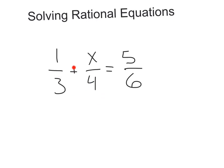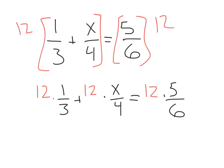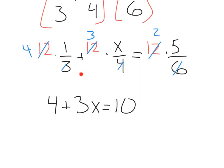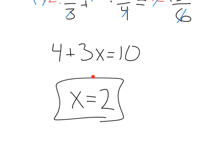Think back to the lesson where we solved by clearing fractions. We would take something like this, multiply by whatever your common denominator is, distribute it out to each term, and then see what cancels out. In this case, the 12 and 3 leave a 4, the 12 and 4 leave a 3, and the 12 and 6 leave a 2. Then we can multiply everything in, 4 plus 3x equals 2 times 5, 10, and we can solve from there.